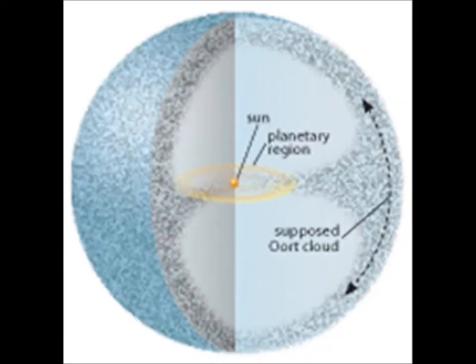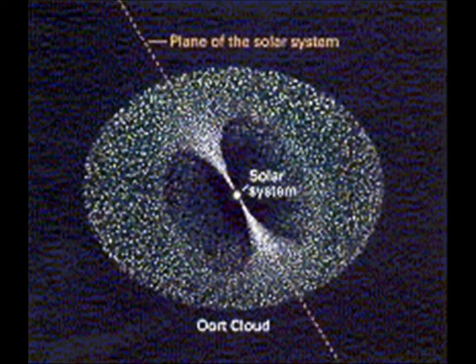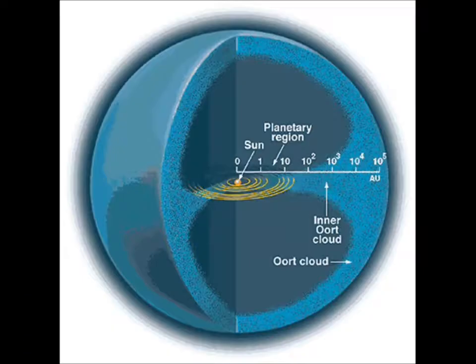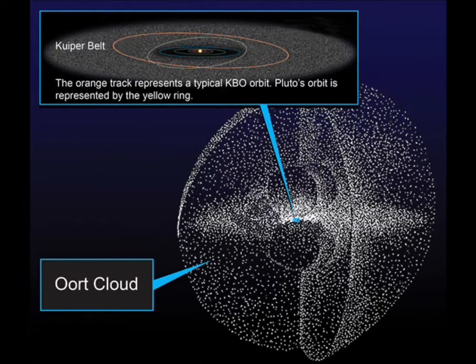Now let's get on to the Oort Cloud. The cloud is basically like a huge spherical ball of large comets and ice surrounding our solar system, from around 50,000 AUs or a light year away. It is also connected to the Kuiper Belt, in a way so that the outer edge of the Kuiper Belt starts to expand up and down until it turns back on itself and creates a sphere. So in a way, the Kuiper Belt and Oort Cloud are connected, but the Kuiper Belt region is very small, as you can see in the picture, compared to the Oort Cloud. Our solar system, as well, looks very small.